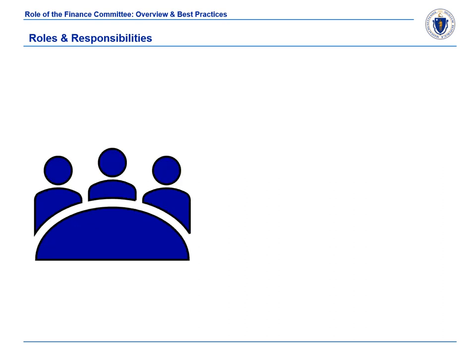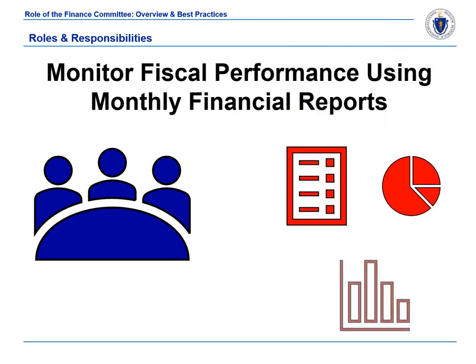Once the budget is enacted, the committee continues its role in the town's financial oversight. The finance committee should review monthly financial reports so that they are informed of changes in the town's financial situation that may impact the upcoming year's budget or the condition at the end of the current fiscal year. It is important for the finance committee to have open lines of communication with town staff to effectively monitor the town's finances.